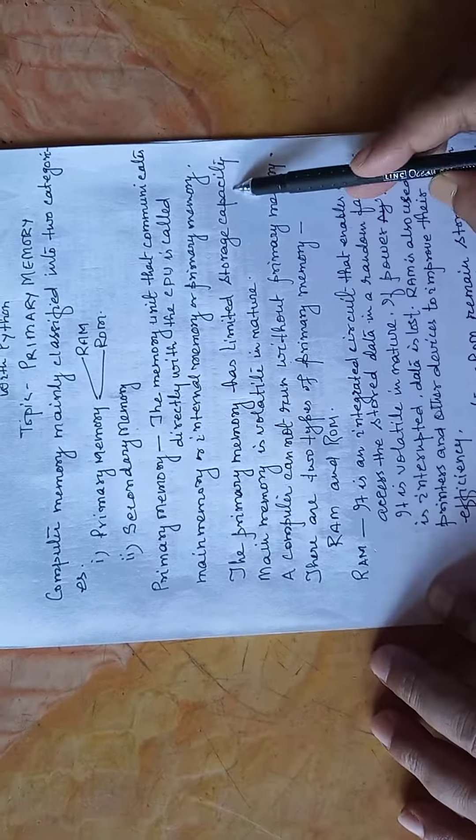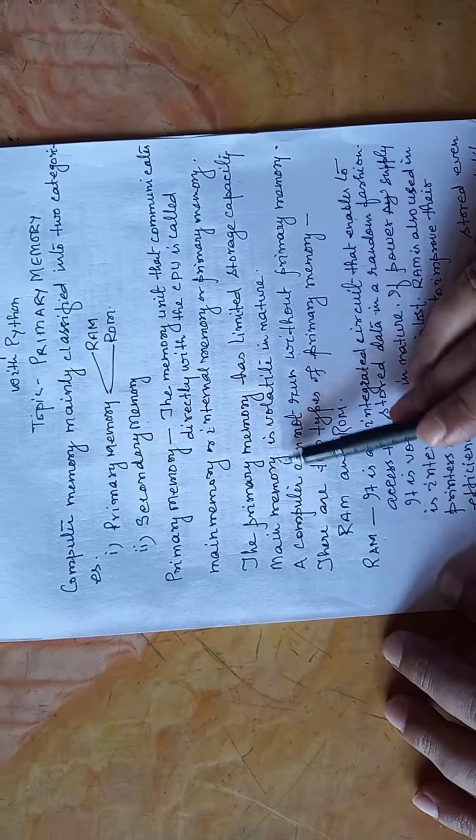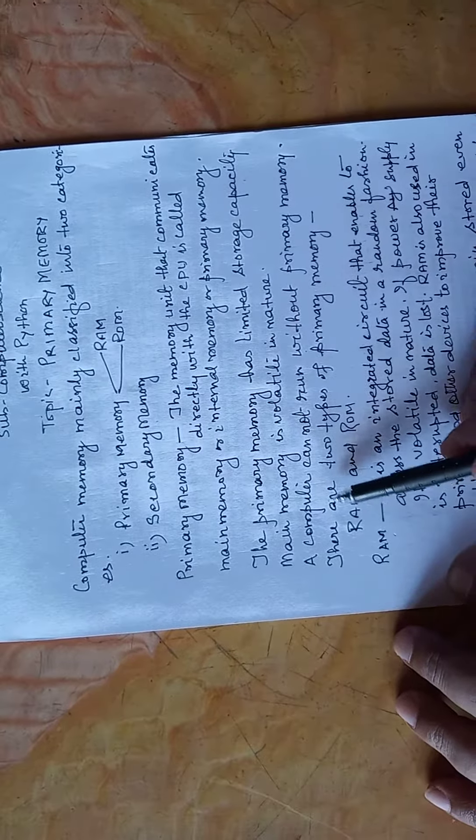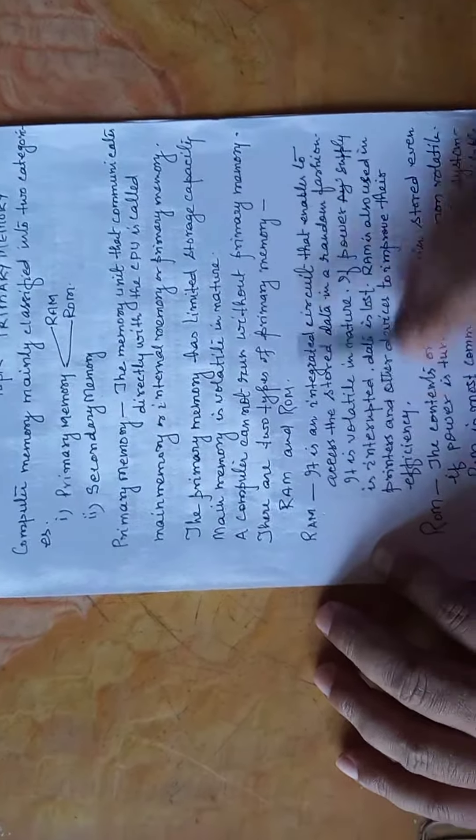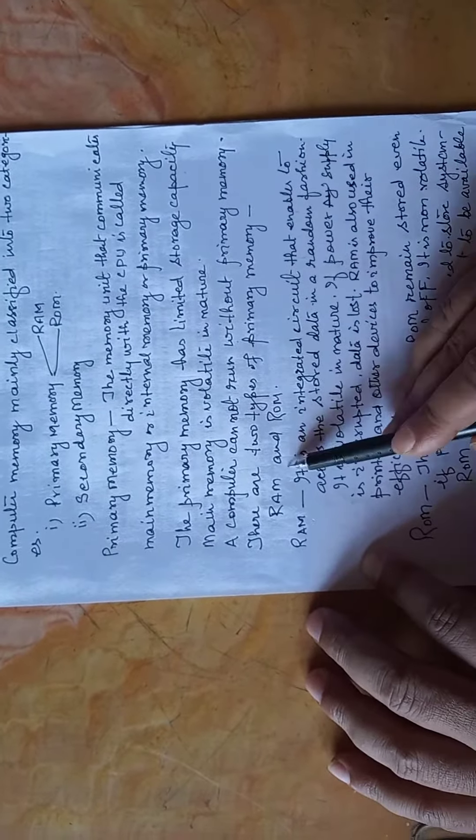Primary memory has limited storage capacity and is volatile. A computer cannot run without primary memory. There are two types of primary memory: RAM and ROM.